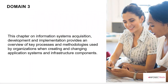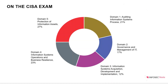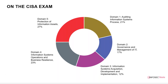This chapter talks about information systems acquisition, development, and implementation, providing an overview of the key processes and methods used by the organization when creating and changing application systems - either building new or upgrading existing application systems and information infrastructure components. This domain has been reduced from around 27 percent to 12 percent, which is a significant reduction. A lot of content has been moved to Domain One with the latest version.